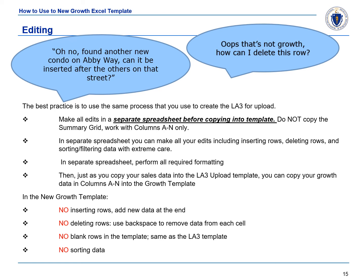A few things that are important to remember in the New Growth Template: there is no inserting of rows — to add new data, add it at the end of your spreadsheet. There is no deleting rows — use the backspace key to remove data from each cell. There can be no blank rows in the template, same as the LA3 template. And there is no sorting of data in the New Growth Template.